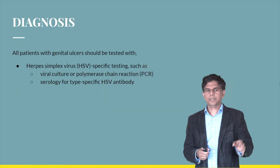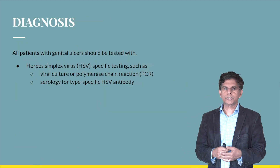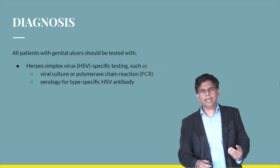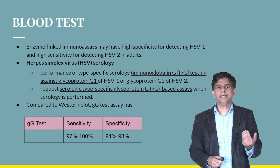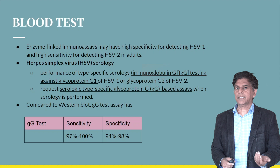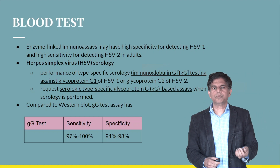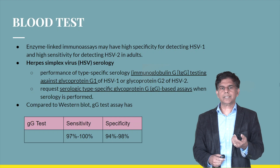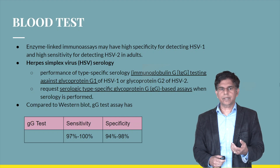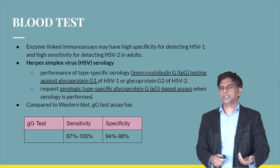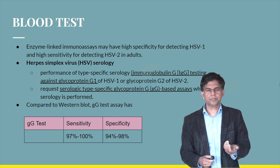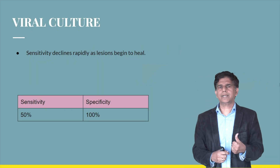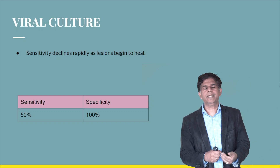For diagnosis of herpes simplex, you can use polymerase chain reaction or viral culture. For blood tests to detect HSV2, the ELISA (enzyme-linked immunoassay) offers high specificity for detecting HSV1 and high sensitivity for detecting HSV2. There is also the herpes simplex virus serology test using an immunoglobulin G test followed by a serological type-specific glycoprotein G-based assay. The glycoprotein G test has sensitivity and specificity of about 97 to 98%. Viral culture sensitivity declines rapidly once lesions begin healing, dropping to around 50% sensitivity, though specificity remains 100%.